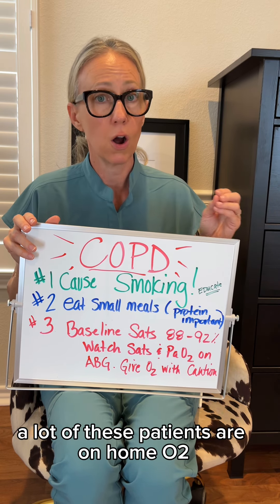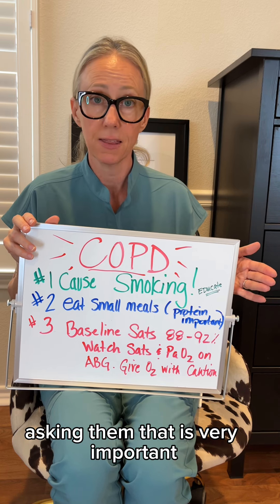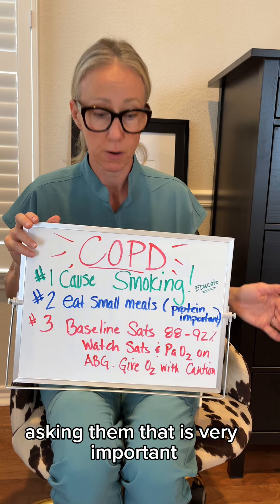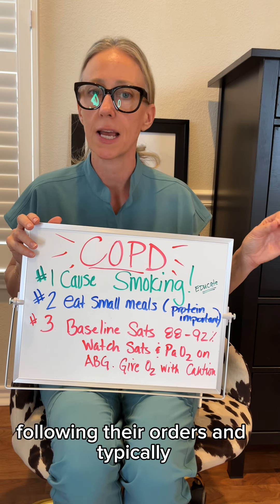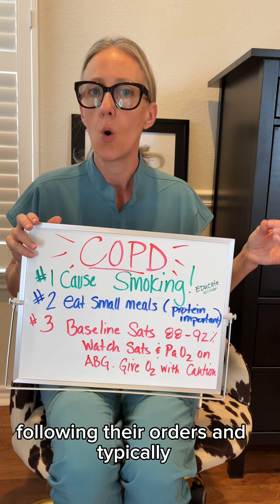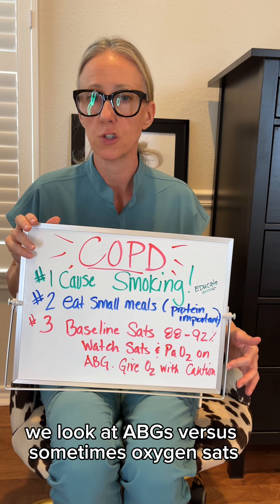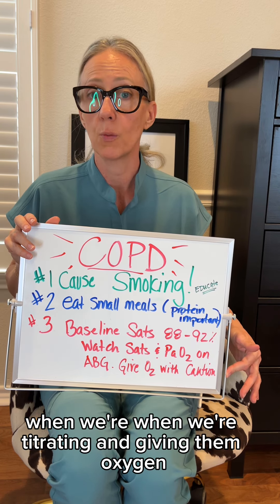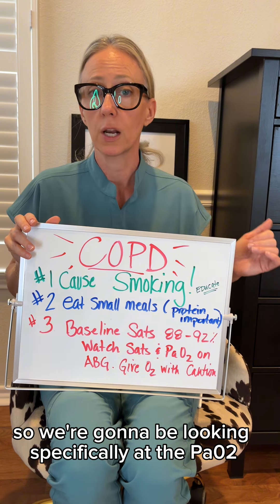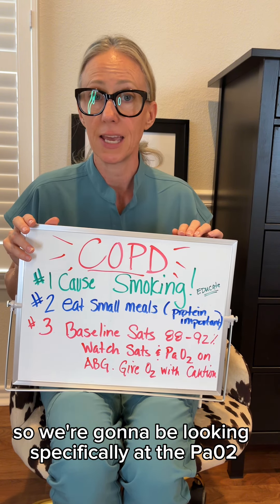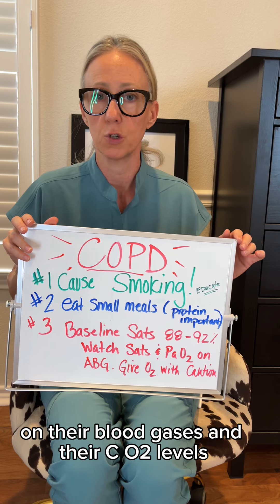A lot of these patients are on home O2, so doing a history question and asking them about that is very important. Knowing their baseline sat and following their orders — typically we look at ABGs versus sometimes oxygen stats when we're titrating and giving them oxygen. We're going to be looking specifically at the PAO2 on their blood gases and their CO2 levels.